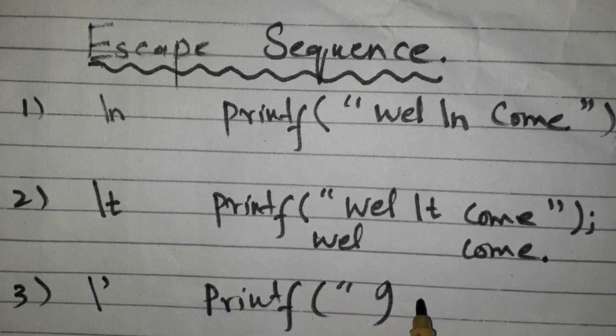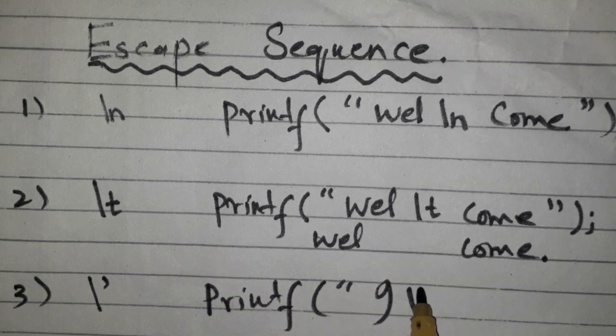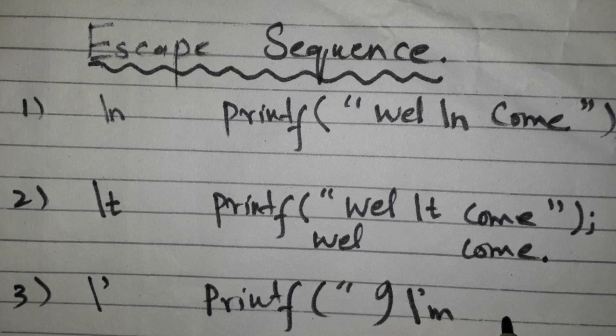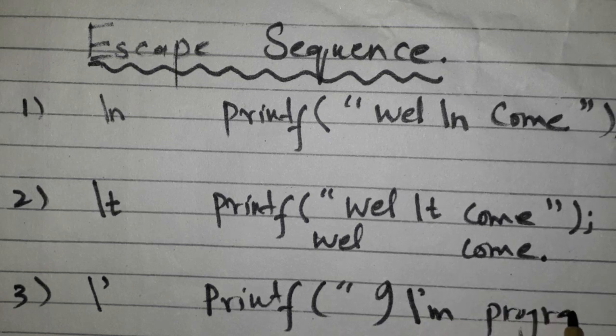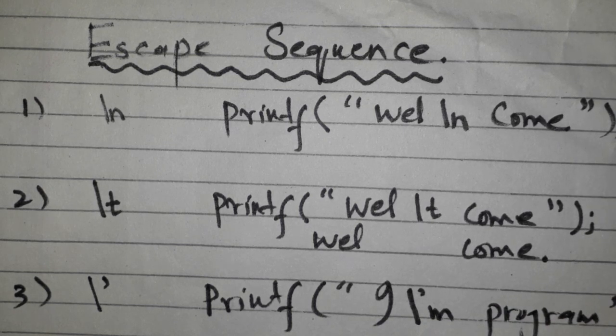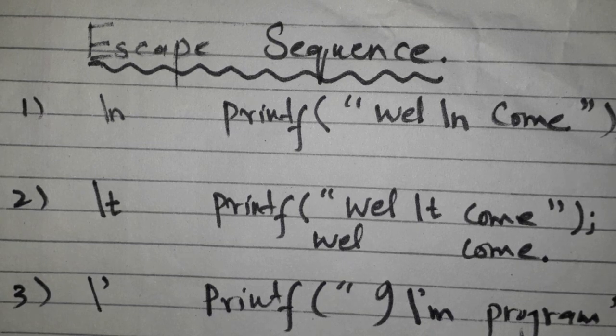To print single quote, backslash quote is used. Printf i am - so we need a single quote to be printed. I am program will be printed.